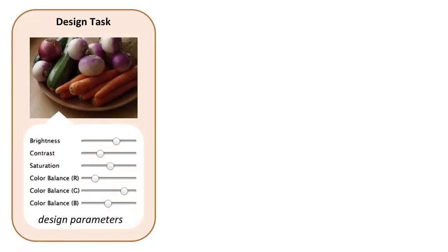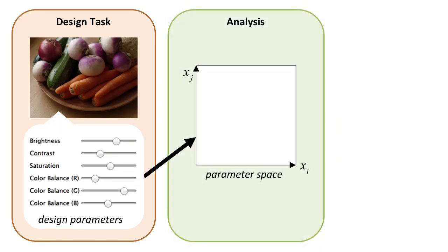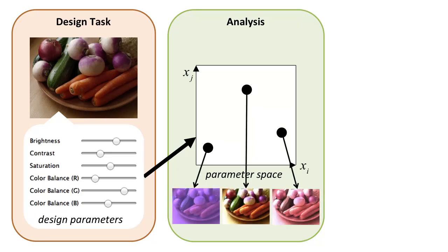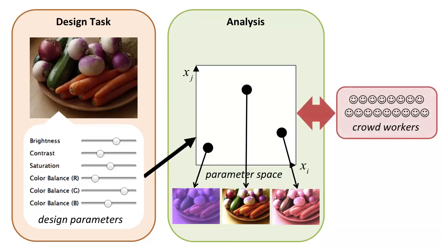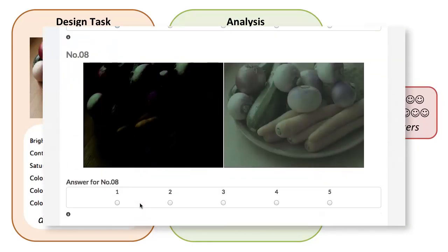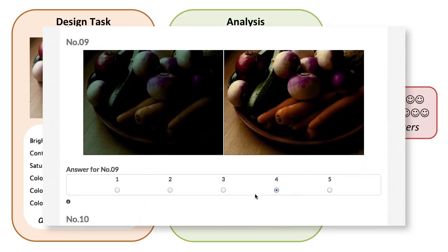Our target is a visual design exploration where the user needs to tweak many parameters. These parameters form a high-dimensional space where each point in the space corresponds to a possible design. We analyze this space to understand which parameters are good and which are not, employing a human computation technique based on crowdsourcing.